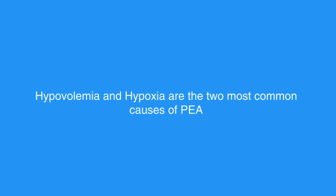Hypovolemia and hypoxia are the two most common causes of PEA. They are also the most easily reversible, and should be at the top of any differential diagnosis. If the individual has a return of spontaneous circulation, or ROSC, proceed to post-cardiac arrest care.